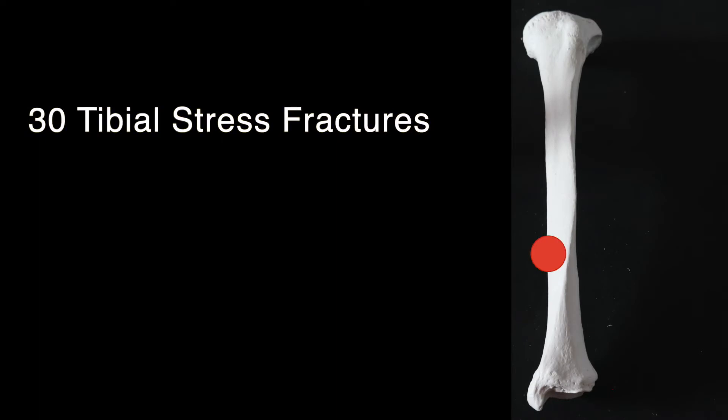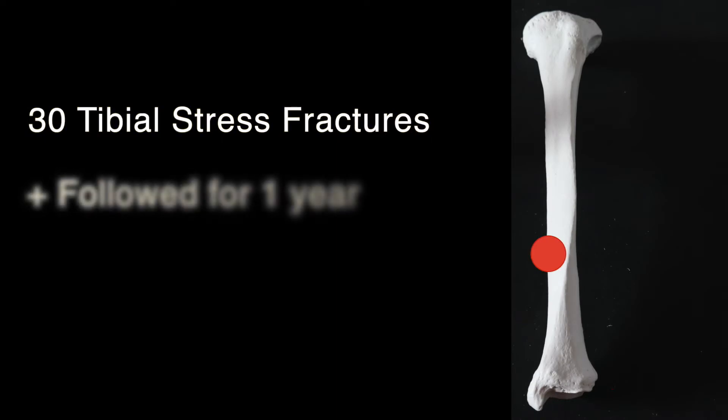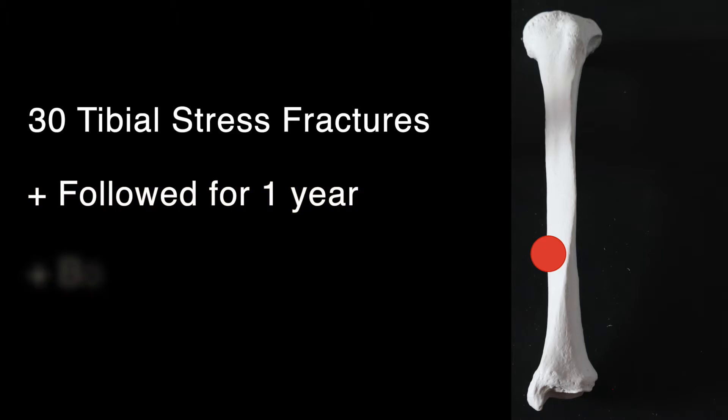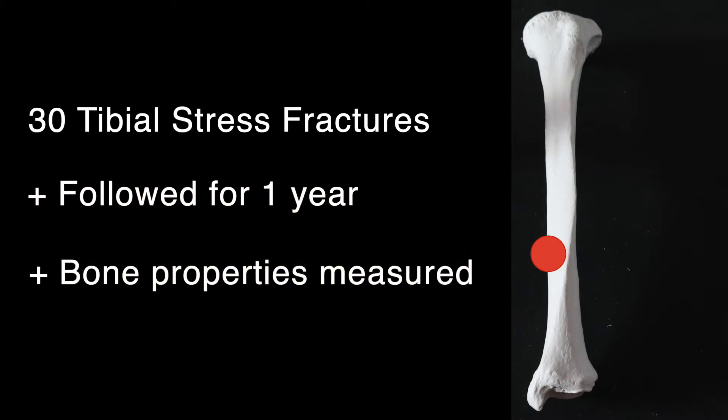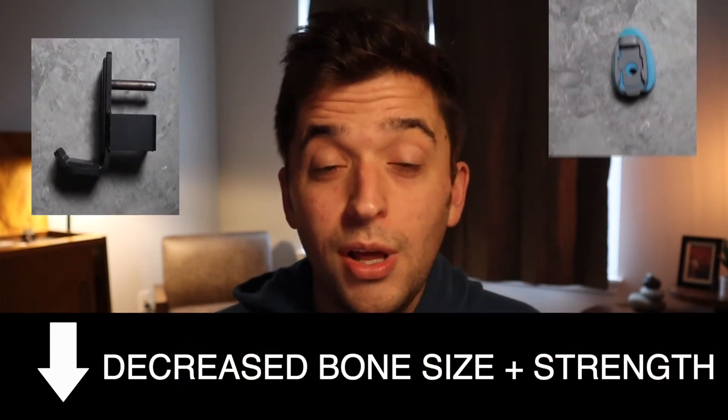Why does any of this matter? There was a really interesting study by Pope and colleagues that followed 30 runners after they were diagnosed with a tibial bone stress injury — the most common bone stress injury for runners — and followed them up to a year to see what happened to their bone properties. During the first 12 weeks, their bone mineral density and the strength of both the cortical and trabecular bone got a lot worse. We think that's because they just weren't doing as much activity.